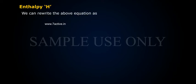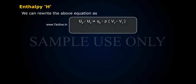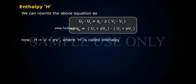We can rewrite the above equation as U2 minus U1 equals QP minus P(V2 minus V1), which gives rise to QP equals (U2 plus PV2) minus (U1 plus PV1).